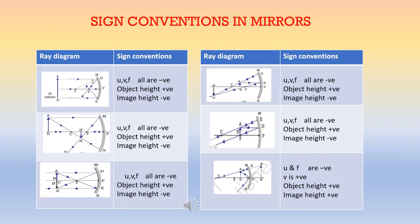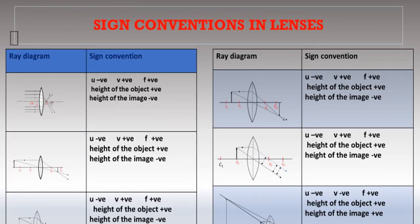Now we can check how sign conventions are applied in each of the following ray diagrams, in the case of mirrors. This table will show how the sign convention is applied in each ray diagram for lenses. Remember: heights of erect images are taken as positive and inverted images as negative. Hope you understood the topic well. We will do numerical problems on this topic in the next video.